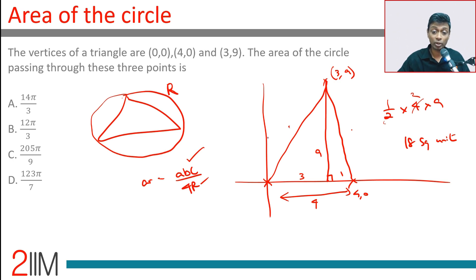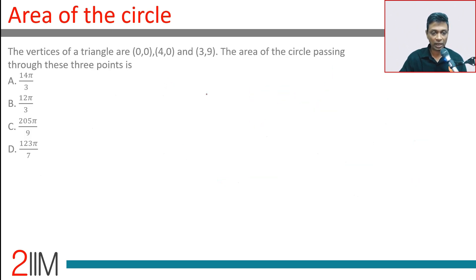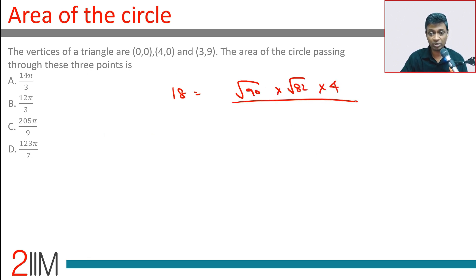All we have to do is apply the Pythagorean theorem. One side is √(9² + 3²) = √90, and another is √(9² + 1²) = √82. The third side is 4. So we have our values: area is 18, and the sides are √90, √82, and 4, giving us abc/4R.